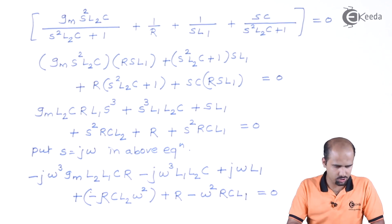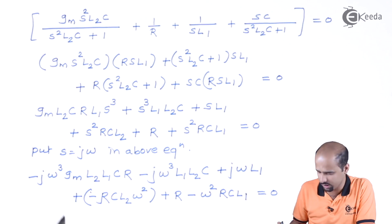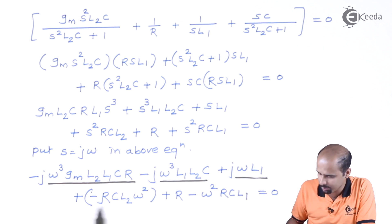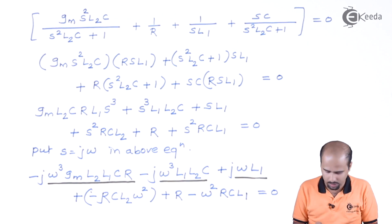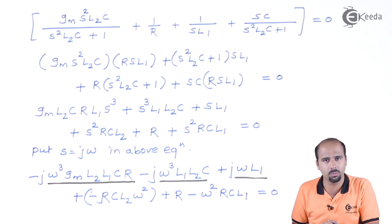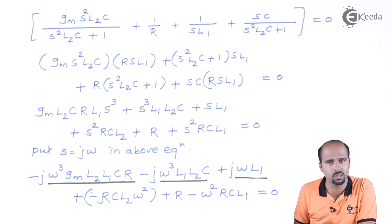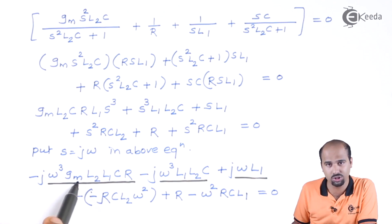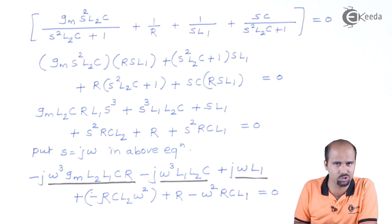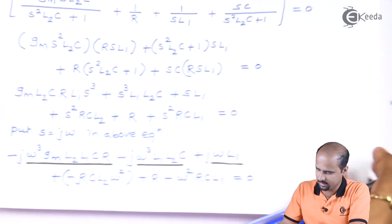Your job is to differentiate the imaginary and real parts. Club the imaginary parts together and equate to zero; club the real parts together and equate to zero. First, accept the term in which Gm is present — from that term we will get the gain, so we keep that for after finding F0. Now take the imaginary terms together, equate to zero — pause your screen and try to get that value.